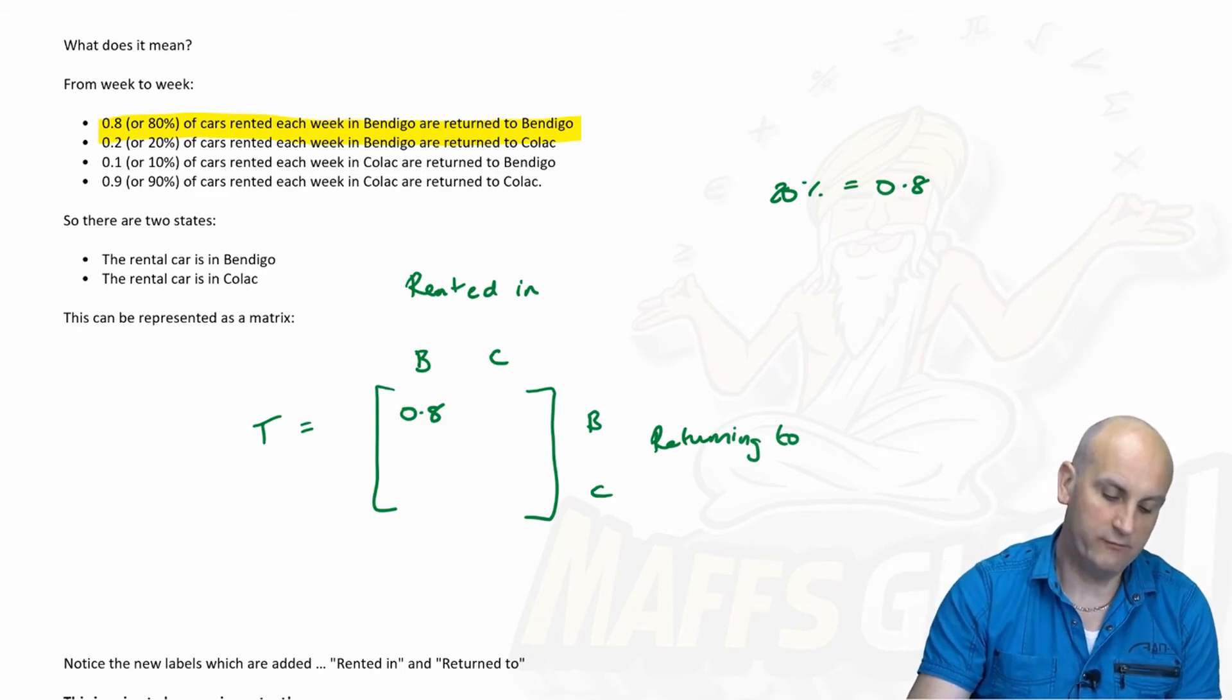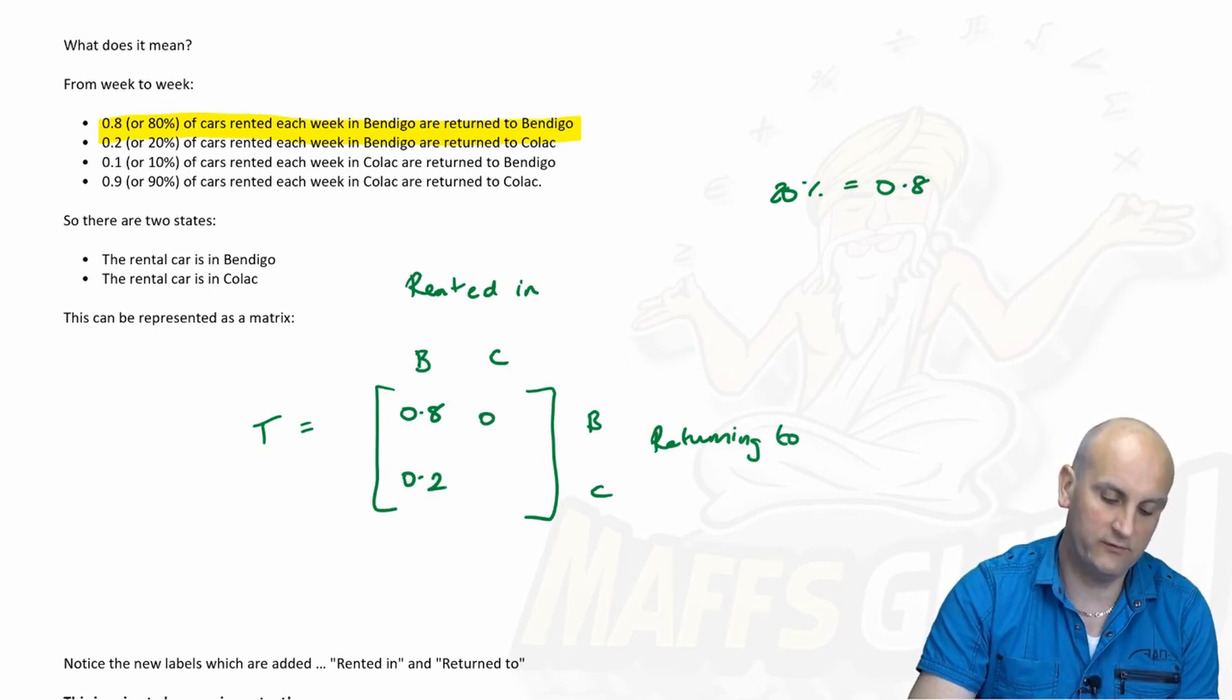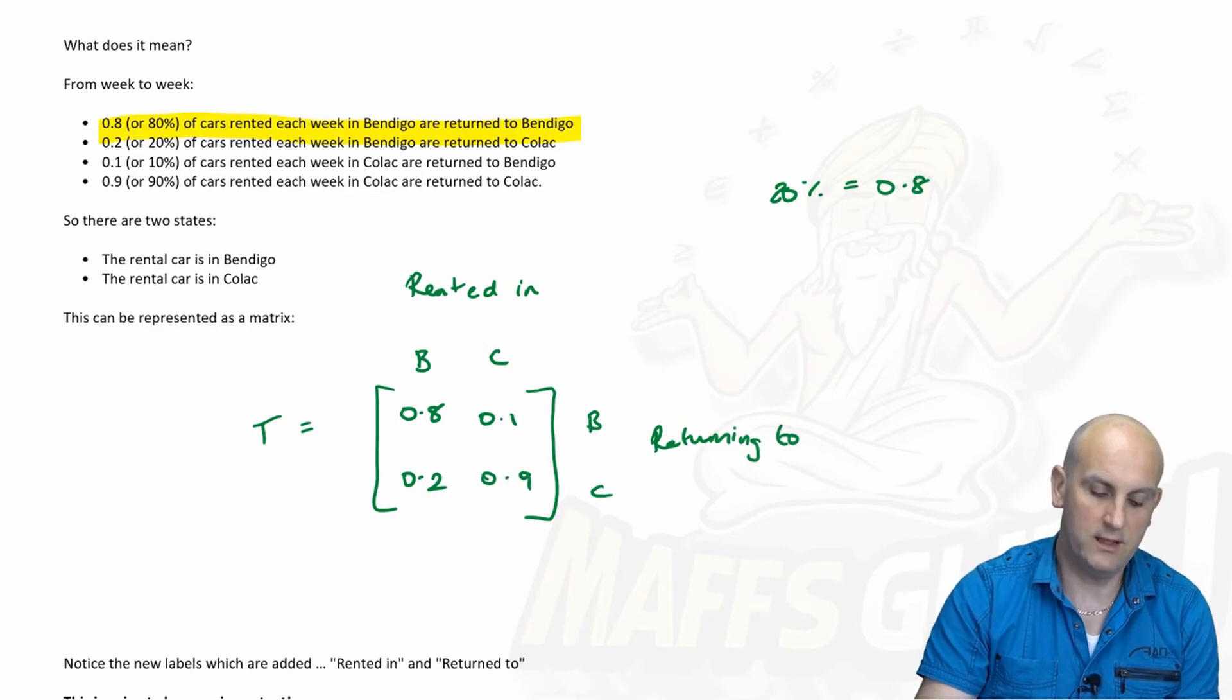20% of cars rented in Bendigo are returned to Colac. So 0.2 goes there. 10% of cars rented in Colac are returned to Bendigo 0.1. And this will be 0.9.